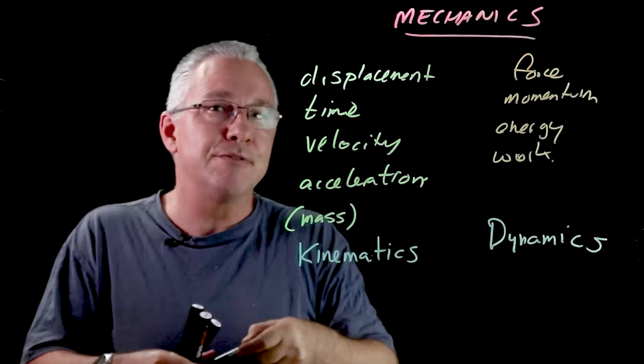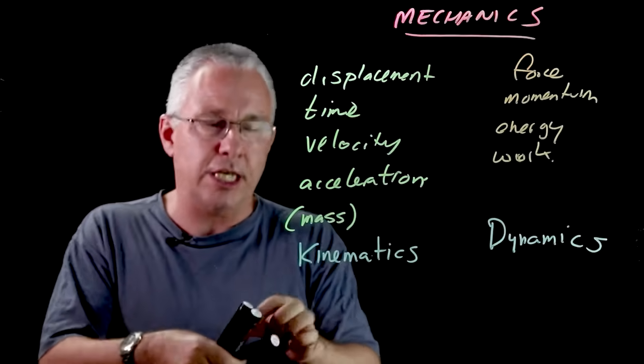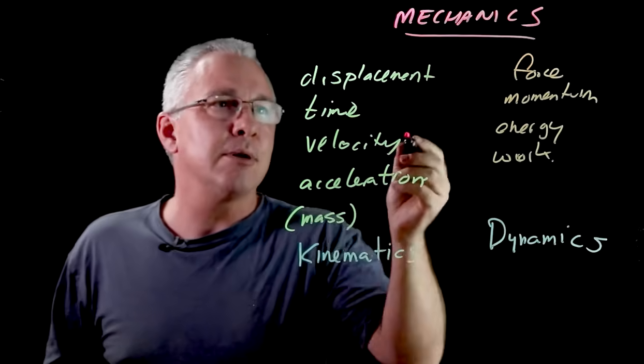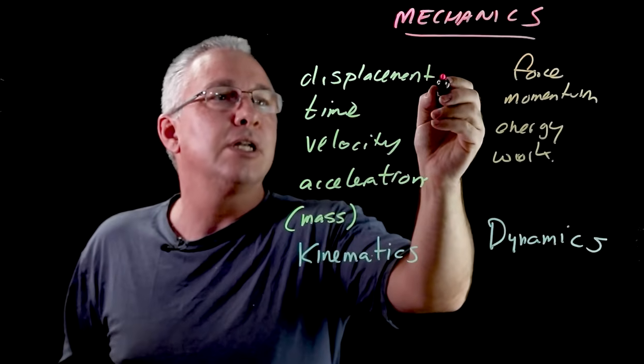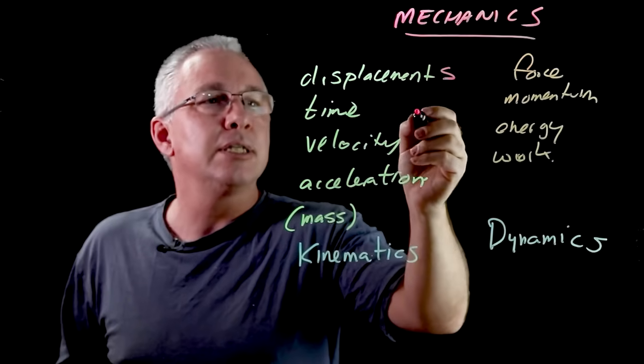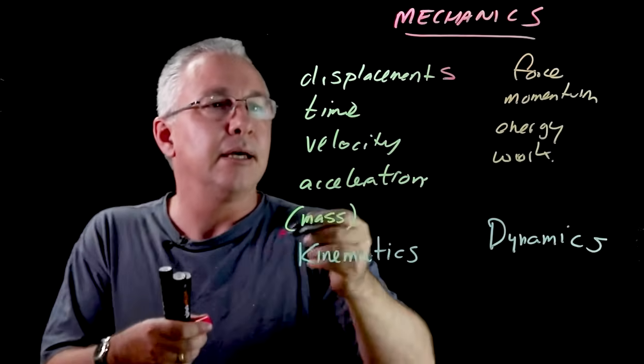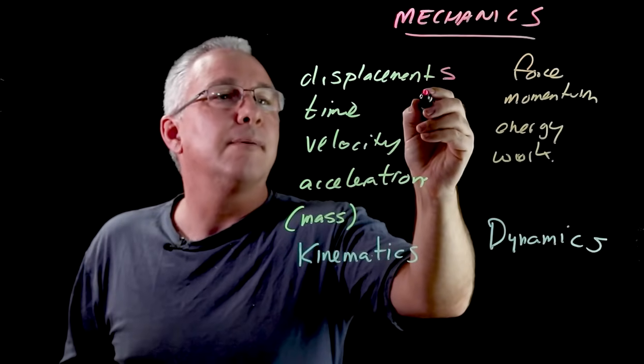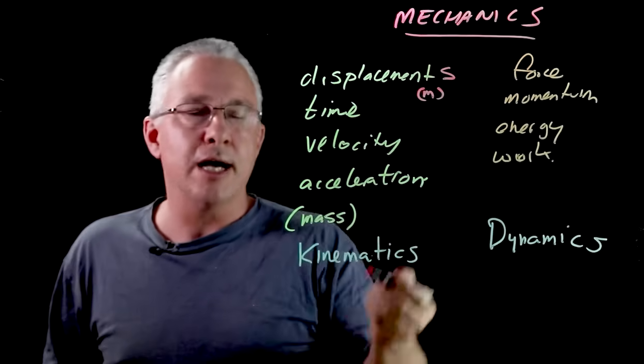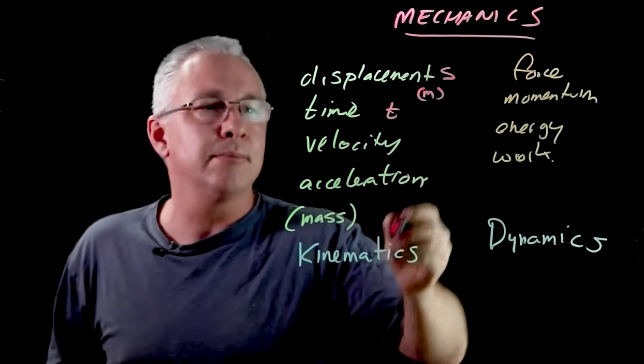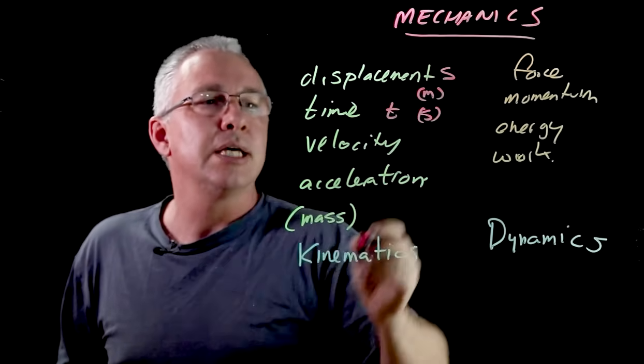Now all of these particular variables have symbols and units associated with them. So with displacement the most common symbol is usually the s and the unit is going to be the unit of meters. For time of course we use t as our symbol and the unit that we use is the second.